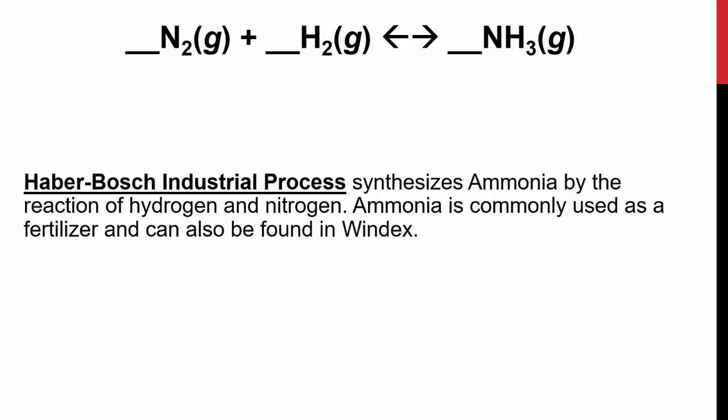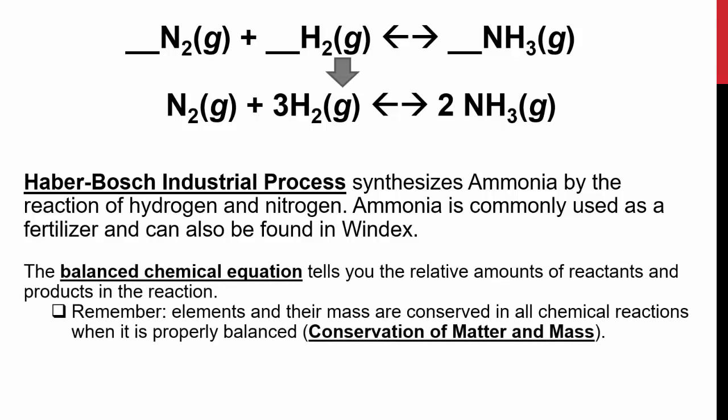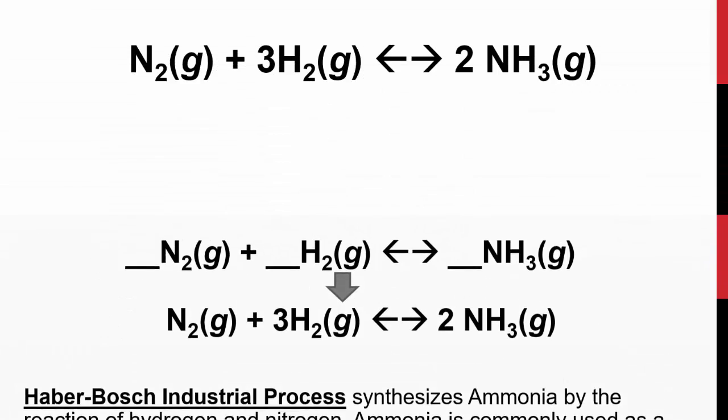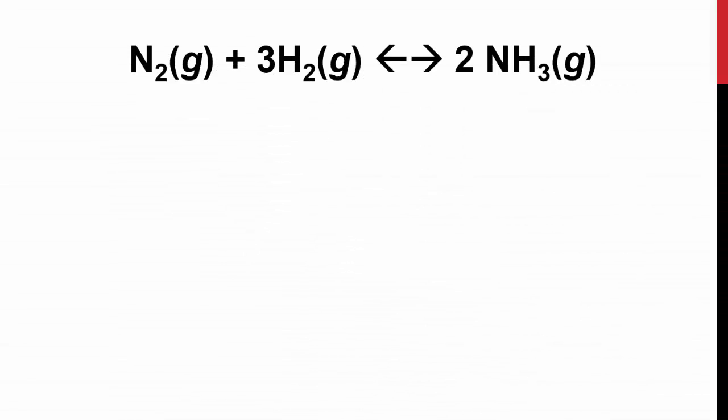The Haber-Bosch industrial process synthesizes ammonia by the reaction of hydrogen and nitrogen. Ammonia is commonly used as a fertilizer and can be also found in Windex. This formula, when we balance it, comes out to be a 1 to 3 to 2 ratio of these reactants to products.